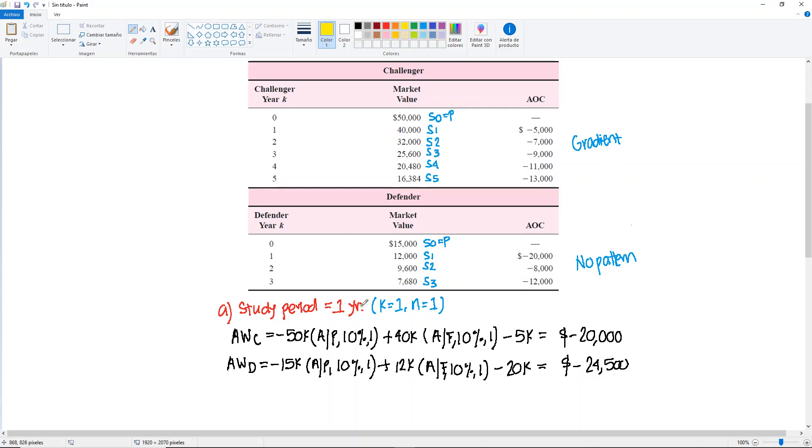This will give us minus 24,500. Let me just highlight that, yes, we have a one-year study period, so our factors will all be ones. And then from here, we compare our results, and the challenger will be selected